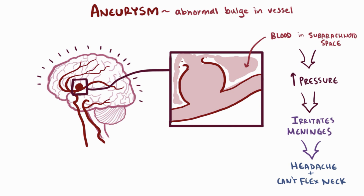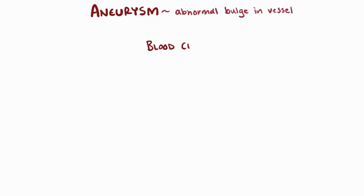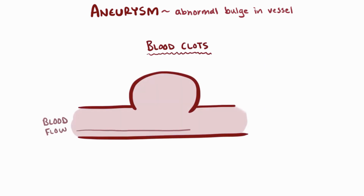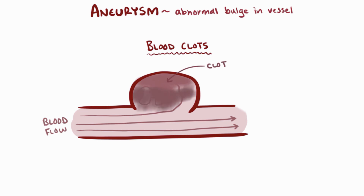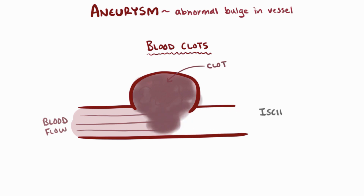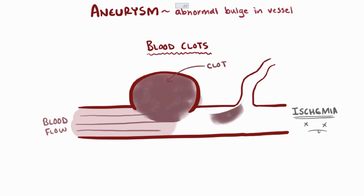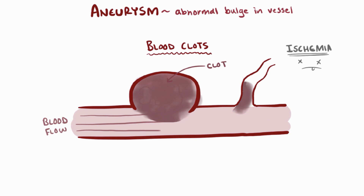Aneurysms can also cause blood clots. As blood flows past an aneurysm, some of it may pool into the extra lumen space created by the aneurysm. This blood isn't pushed along as quickly and, when blood stays still for too long, it clots. Given enough time, the clot might grow large enough to block the entire vessel causing ischemia, or it could break into smaller pieces called emboli that get wedged into small blood vessels, also causing ischemia.